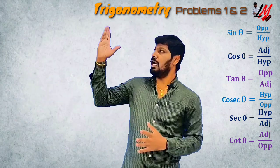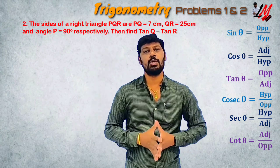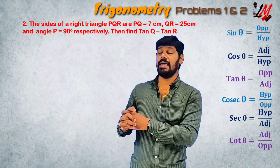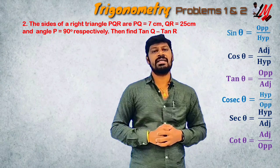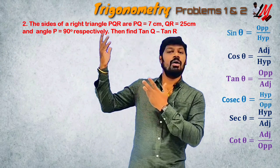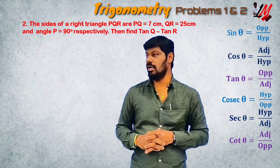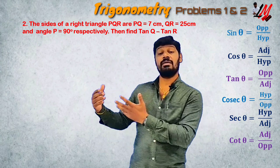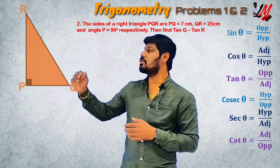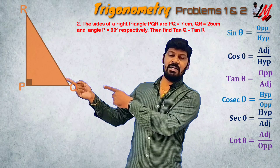Now have a look at the second question. We have to find what is the value of tan Q minus tan R. First of all, we have to make a triangle image.